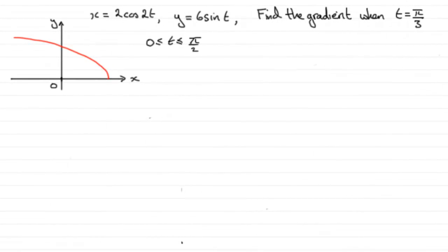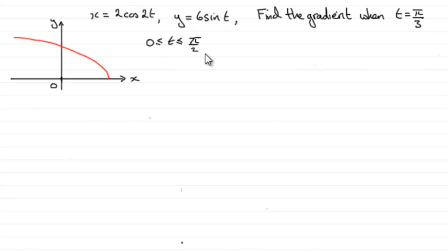For this part of the question, we're given the parametric equation of the curve: x equals 2cos2t, y equals 6sint, and t goes between 0 and π/2 inclusive. What we've got to do is find the gradient when t equals π/3.